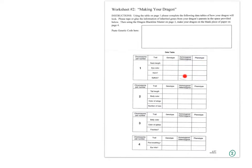Start from phenotype and move back to heterozygous or homozygous. If your neck length is homozygous recessive, it has to be homozygous. If your neck length is dominant, then you could have heterozygous or homozygous dominant. So if your phenotype is recessive, it has to be homozygous. If your phenotype is dominant, it could be either heterozygous or homozygous — that's your choice. Then you put that genotype in, which you get from the table on page one. Fill out the genotype for neck length, eye color, horns, and spikes.